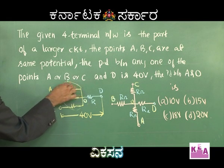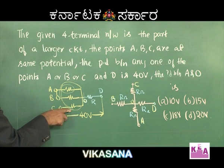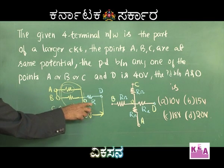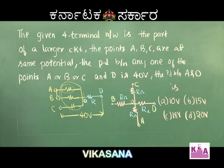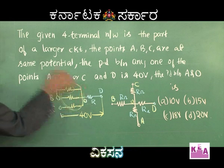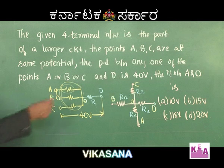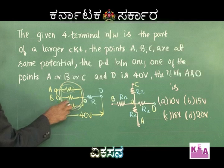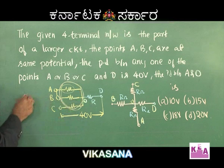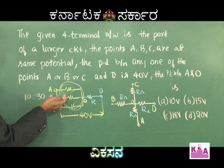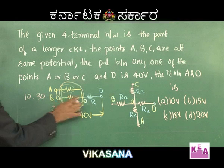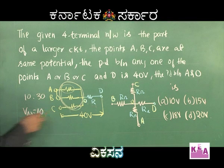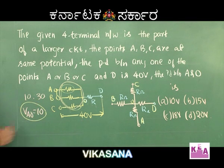The equivalent resistance of the three parallel R resistors is R by 3. If this combination is R by 3 and the remaining section is R, then the voltage divides in the ratio 1 by 3 is to 1, or equivalently 1 is to 3. Dividing 40 volts in the ratio 1 is to 3 gives 10 is to 30. Therefore V(A to O) equals 10 volts and V(O to D) equals 30 volts.